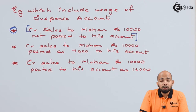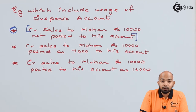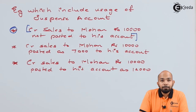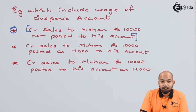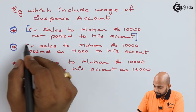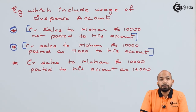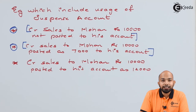The first suspense account example: credit sales to Mr. Mohan has not been posted to his account — meaning the sales account has been already credited, but Mohan's account was not debited. The second: credit sales to Mr. Mohan of rupees 10,000 has been posted as rupees 7,000 to his account — a shortage of rupees 3,000. The third: credit sales of rupees 10,000 to Mr. Mohan posted to his account as rupees 12,000 — an excess of rupees 2,000.